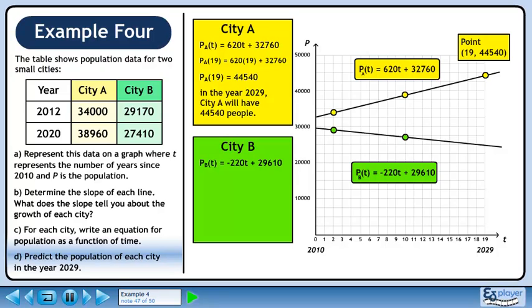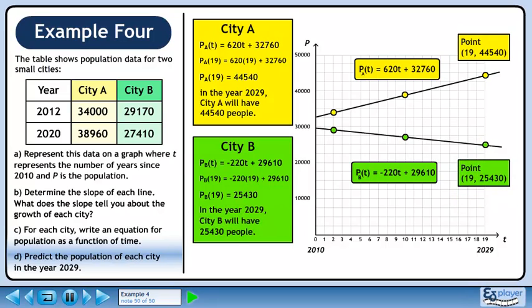Now we'll find the population of city B in 2029. In the year 2029, city B will have 25,430 people.